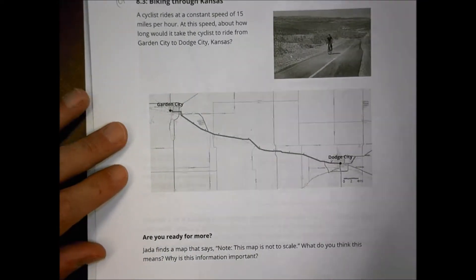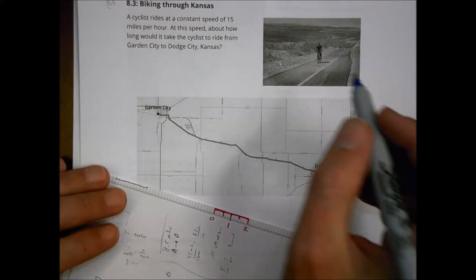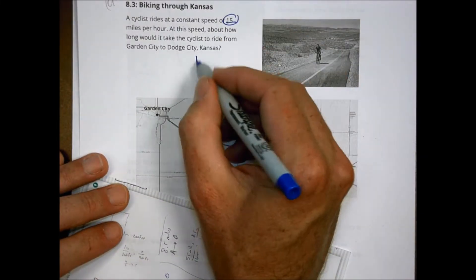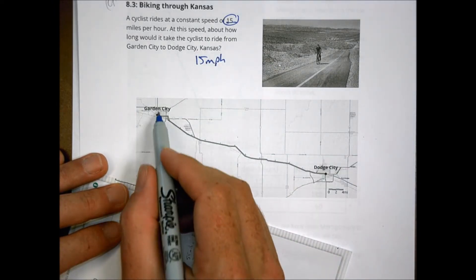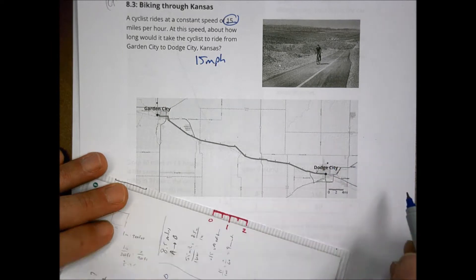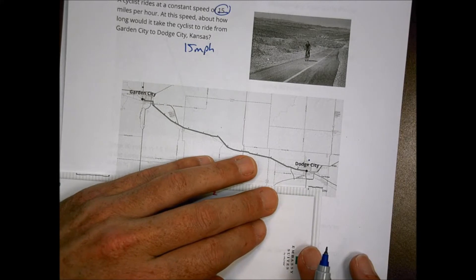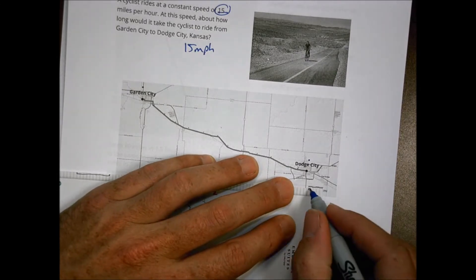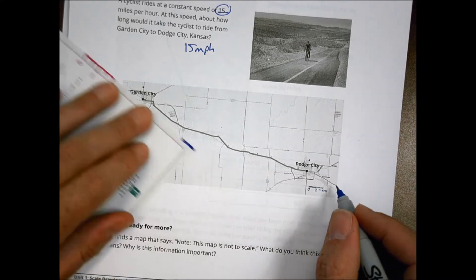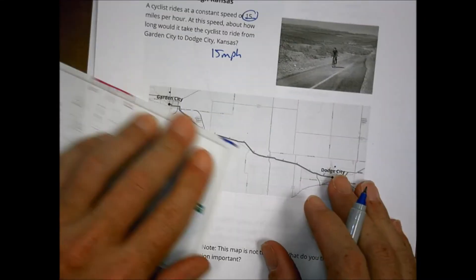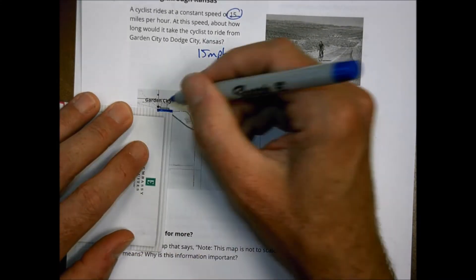On the next one, we have a picture of a bicyclist going through a biking through Kansas. And it says that cyclist rides at a constant speed of 15 miles per hour. At that speed, about how long would it take to get from Garden City to Dodge City. And they give us a scale down below. And here's our little scale. We can see here that from this point to the edge of my paper is about four miles.